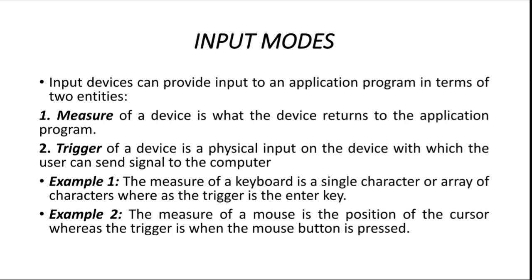Measure of a device is what the device returns to the application program. For example, a keyboard is going to return characters to the program, so that character is the measure of a keyboard. Coordinate is the measure of a mouse — X coordinate, Y coordinate, two-dimensional coordinates. So measure is what the device is going to return to the application program.